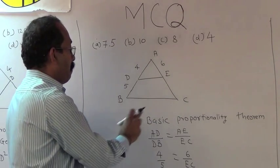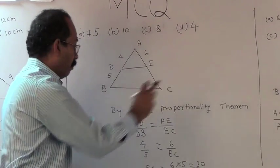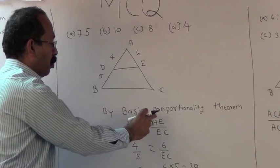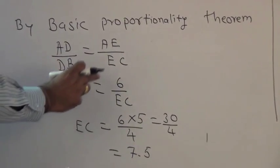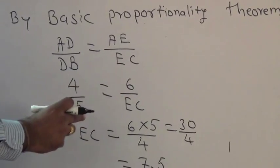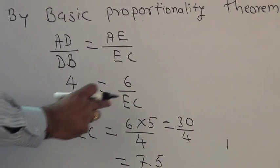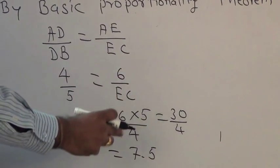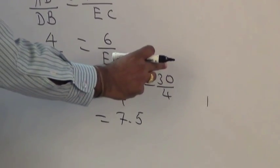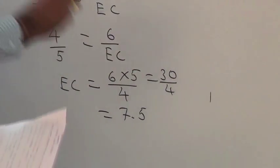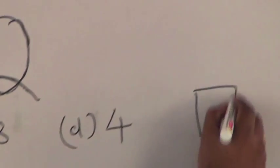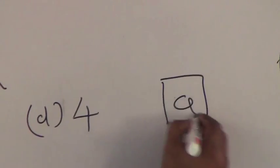By the basic proportionality theorem, AD upon DB is equal to AE upon EC. Substituting: 4 upon 5 equals 6 upon EC, so EC equals 6 × 5 upon 4, which equals 30 upon 4, equal to 7.5. Alternative A represents answer 7.5, so A is the correct alternative.